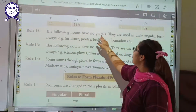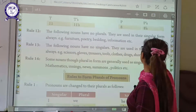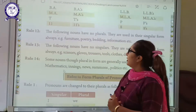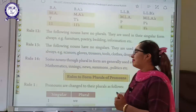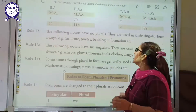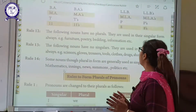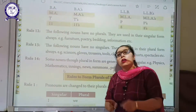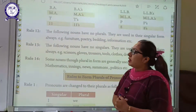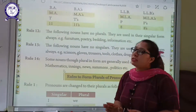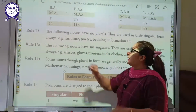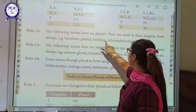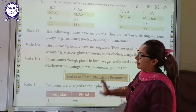Rule number 12: The following nouns have no plural. They are always used in their singular form. Some nouns have no plural and are always used in a singular form — they are not changed into plural form. Examples include: furniture, poetry, wedding, information, etc.